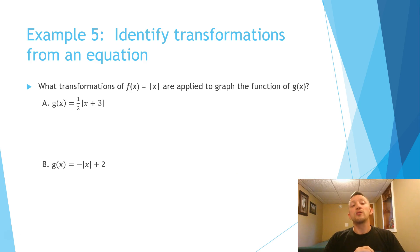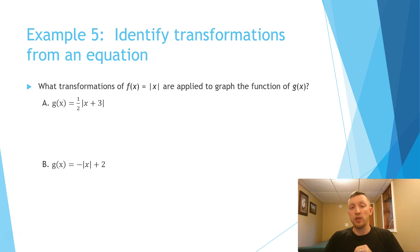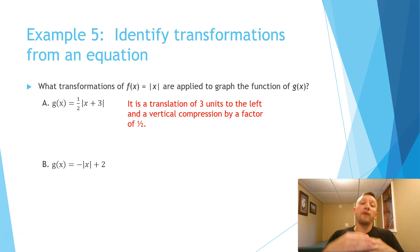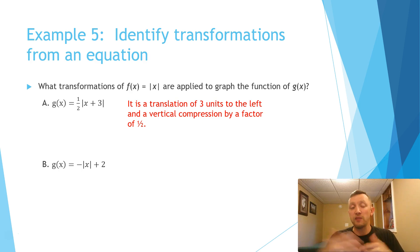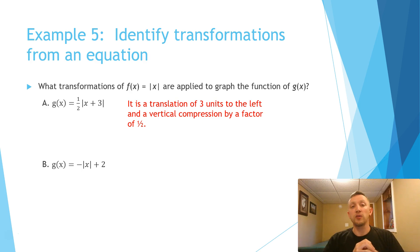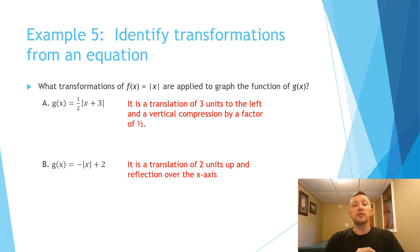Let's try these transformations on the parent function, the absolute value of x. For the first one, we have one half outside the absolute value and x plus 3. The one half is not happening directly with the x, so it compresses vertically to be half the size. The x plus 3, since it's happening directly with the x, we do the opposite — it moves to the left 3 units. For letter B, we have the negative value of x plus 2: that's 2 units up, and the negative outside means it's flipped over the x-axis.